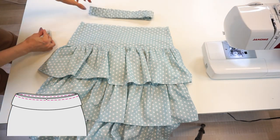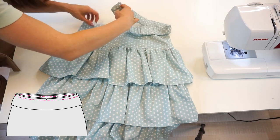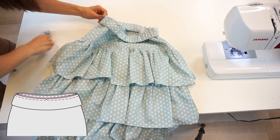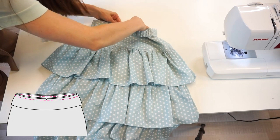Lay the waistband right side with the skirt's right side. Match the waistband side seams with the skirt's side seams as well as the notches at the middle.